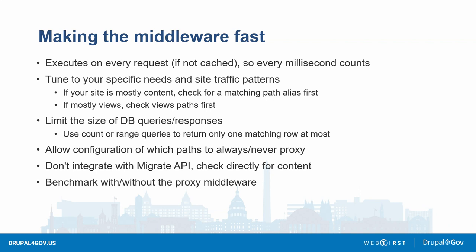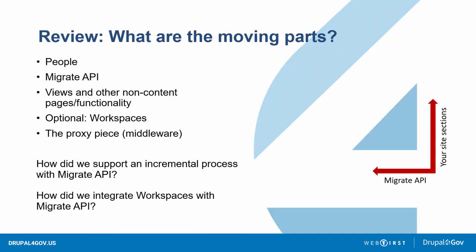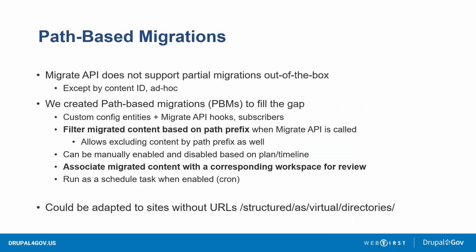That takes us through all the moving parts — a little review: the people, the Migrate API, the code, the Workspaces, our middleware. But we forgot about those orthogonal concepts: the Migrate API and incremental migrations aren't exactly playing well together, and how does Workspaces work with the Migrate API? That's where we developed a custom solution which we call path-based migrations — a custom module with config entities that also has Migrate API hooks and event subscribers.